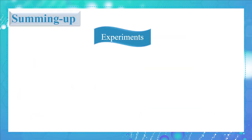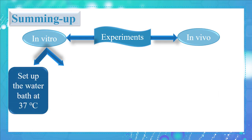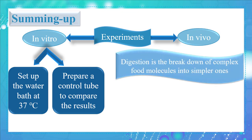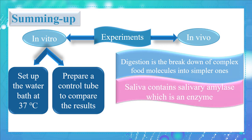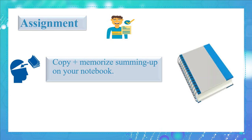Let's sum it up. There are two types of experiments: in vivo and in vitro. When preparing an in vitro experiment, set up the water bath at 37 degrees Celsius and prepare a control tube to compare results. Digestion is the breakdown of complex food molecules into simpler ones. Saliva contains salivary amylase, which is an enzyme. Salivary amylase hydrolyzes starch into maltose. You will be assigned to copy and memorize the summary in your notebook.